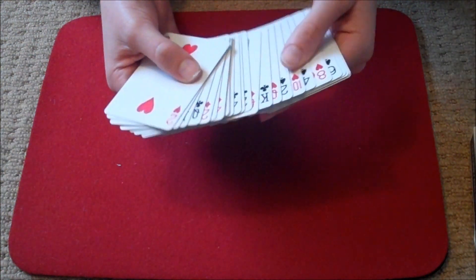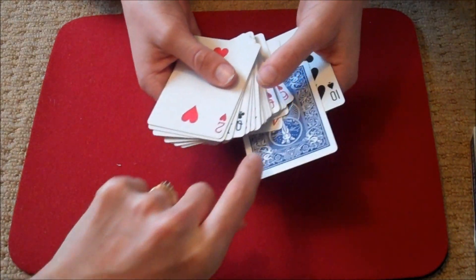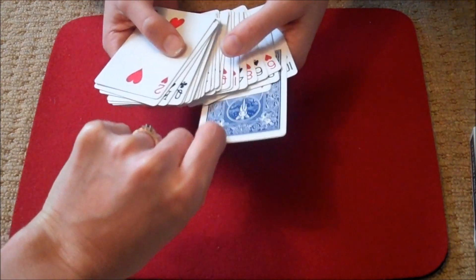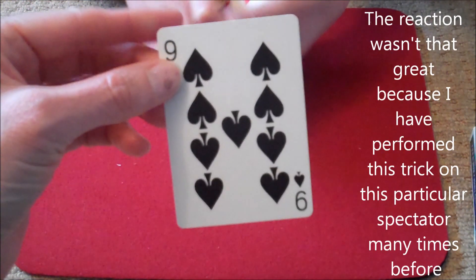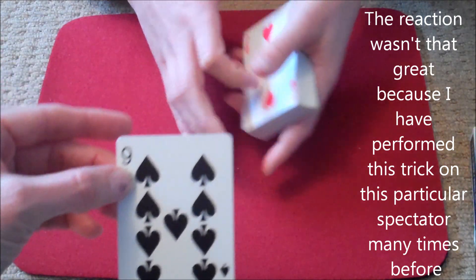If we go through the cards, we find that there is just one card face down in an entirely face-up deck. And that card is the spectator's selection, the Nine of Spades.